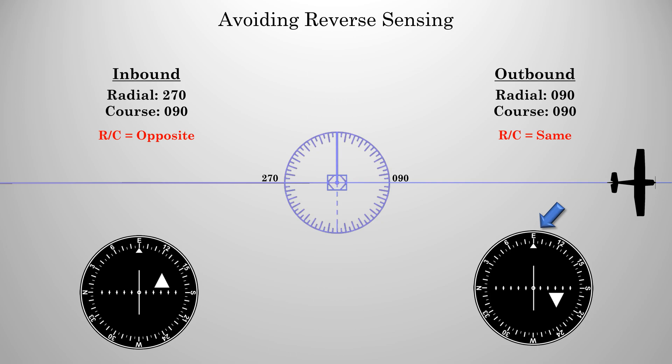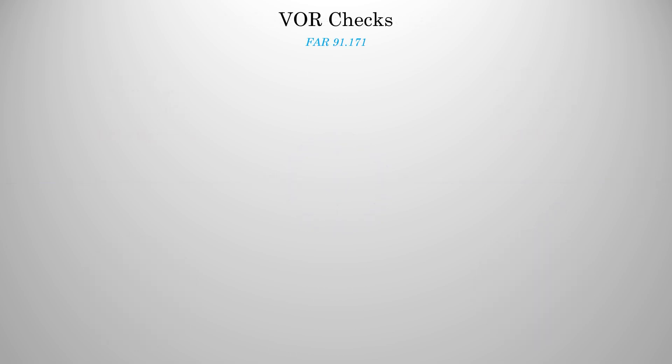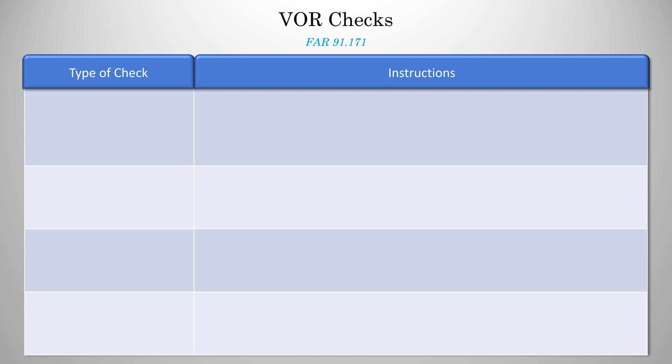Now, in order to even use a VOR for navigation, you have to have done a VOR check within the previous 30 days. The rules are located in FAR 91-171, and they provide a few different ways to accomplish this.